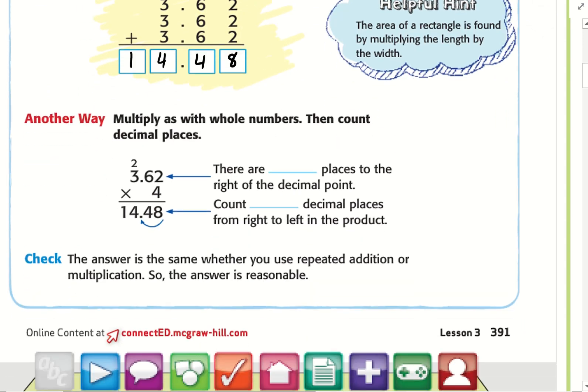Another way is to multiply as with whole numbers, then count decimal places. In adding and subtracting decimals, we had to line up the decimal places. When we multiply, it's different. We're going to multiply first.